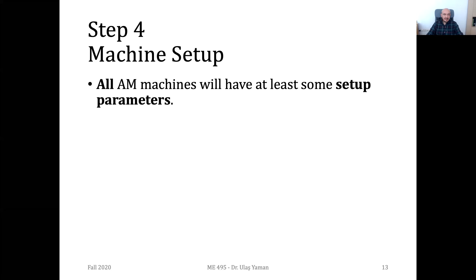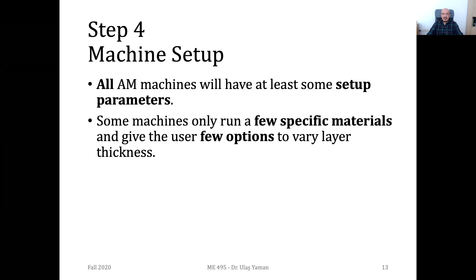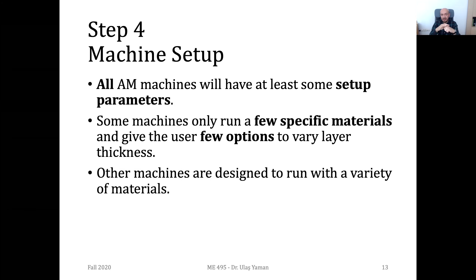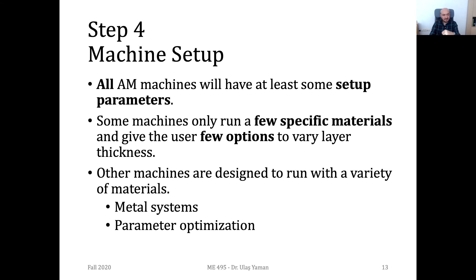In the fourth step on the CAM software side, once you import your STL model, you need to do some settings — for instance, the infill percentage, whether you're going to fill it completely with material or just 50%. You need to select materials, set the layer thickness, set the speed for the laser or extruder heads, and set the temperature for the material. These settings are much more complicated especially for metal systems.